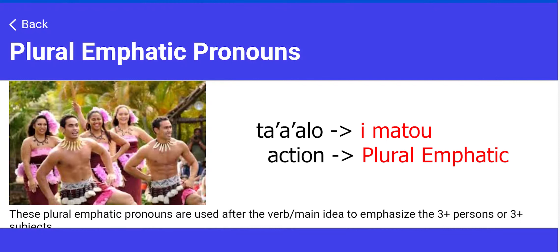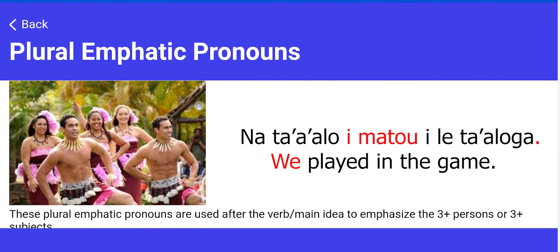This is a video on plural emphatic pronouns. Remember that emphatic pronouns are said after the action or the main idea. So if you wanted to say that we played in the game, in Samoan it would be: na ta'alo, imato, ili ta'alonga.